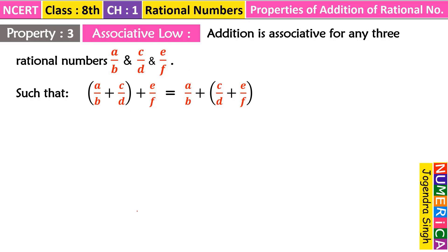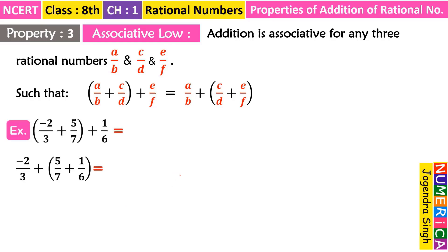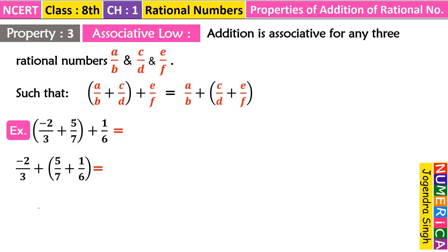The example is: (−2/3 + 5/7) + 1/6. We have three rational numbers. In the first grouping, we add the first two rational numbers first, then add the third. After taking LCM in the bracket we get 21 as LCM, and (−14 + 15) in the numerator. Our + 1/6 remains as it is.